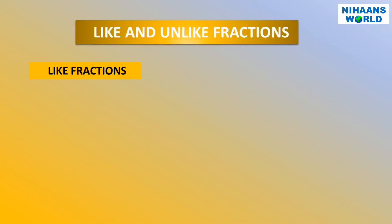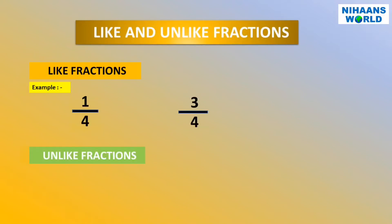Like fractions: fractions with the same denominators are called like fractions. For example, one upon four and three upon four. Unlike fractions: fractions with different denominators are called unlike fractions. For example, five upon eight, five upon three, and two upon seven.